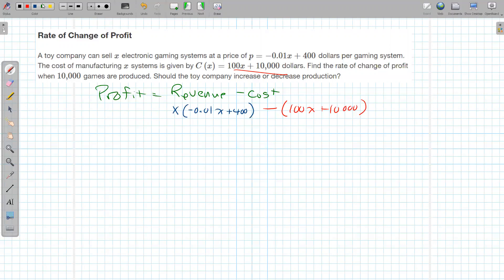So let's clean that up a little bit. We're going to get a negative one hundredth x squared plus we'll have 400x minus 100x which should give us 300x from those two terms and then minus the ten thousand. So this right here is our profit function. So let's call this capital P of x, capital P for profit, not little p for price.